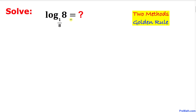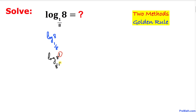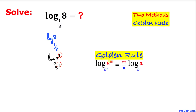Here's our next problem. I have just copied it down and now we are going to find the value of this one by using the golden rule. Let's focus on base 1/8. This could be written as log of 8 with the base 8 power negative 1. And 8 could be written as 8 power 1. Now we can see we have two exponents: one on top is 1 and the other is negative 1. The golden rule says we drag them outside — the 1 goes to the top and the negative 1 goes to the bottom of the fraction.